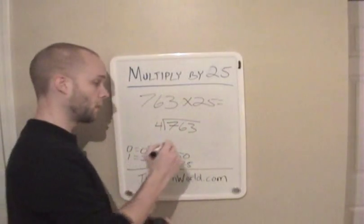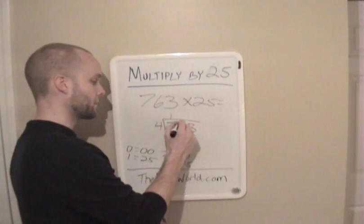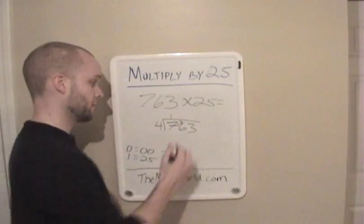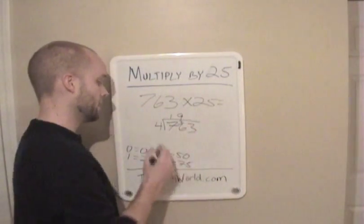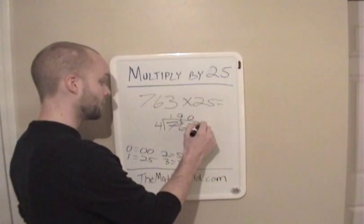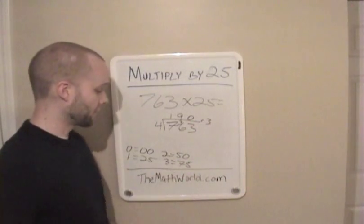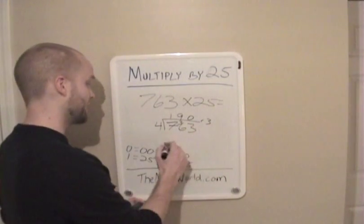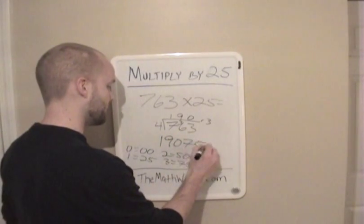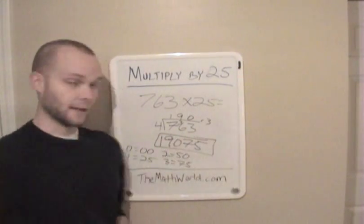4 goes into 7 one time with a remainder of 3. 4 goes into 36 nine times. And 4 goes into 3 zero times. And we have a remainder of 3. If we have a remainder of 3, we're going to write 75. So our answer is 19075. And that's our answer.